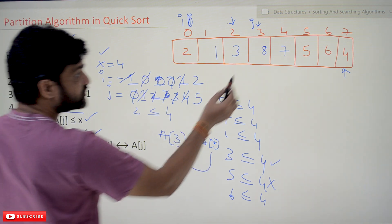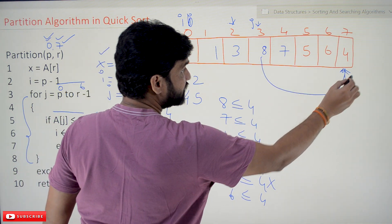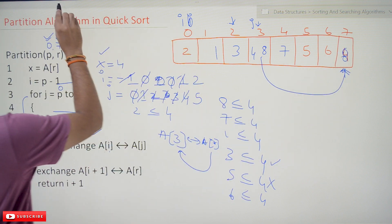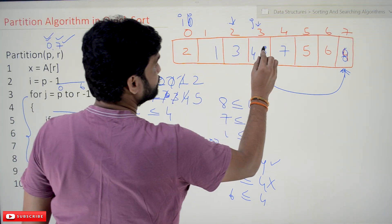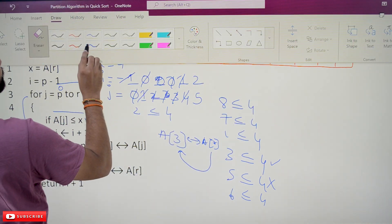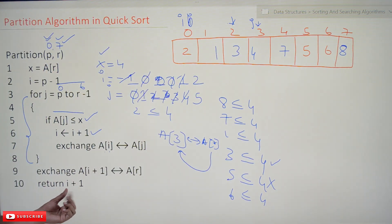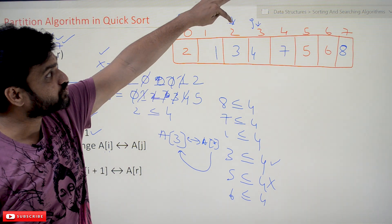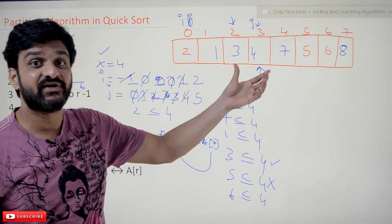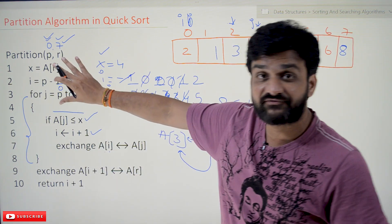a[3] and a[r] are exchanged. The element greater than 4 at index 3 is swapped with the pivot 4 at index r. So 4 is placed at index 3 and the displaced element moves to index r. We then return i+1, which is 2+1 = 3. This is the index of the pivot element in its sorted position, and based upon this the division will happen.